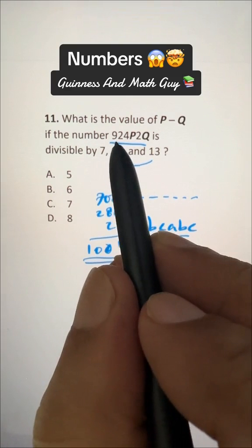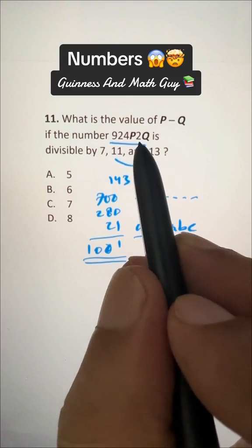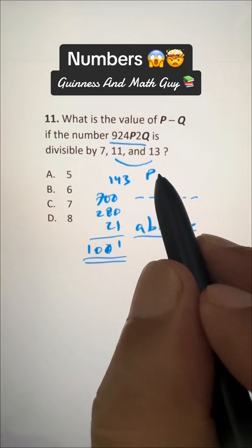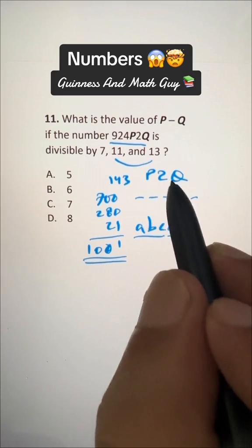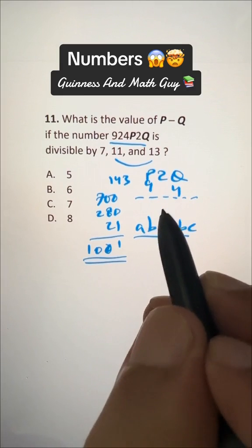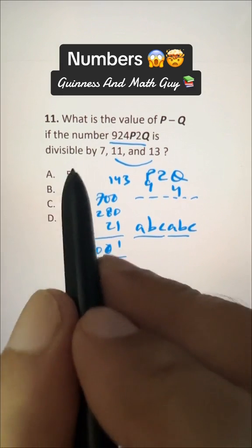Now here, if it is 924, the next 3 digits must be 924 also. If we say P2Q equals 924, it means P is 9 and Q is 4. 9 minus 4 is 5—that's our answer.